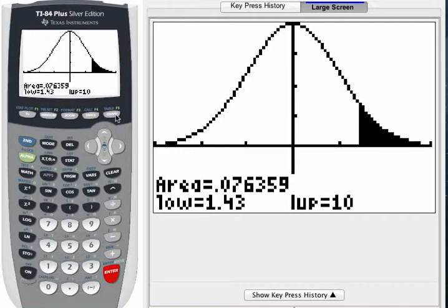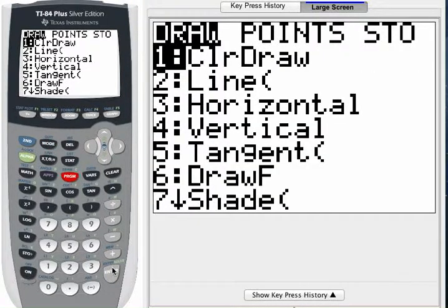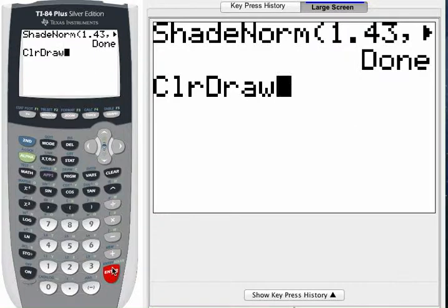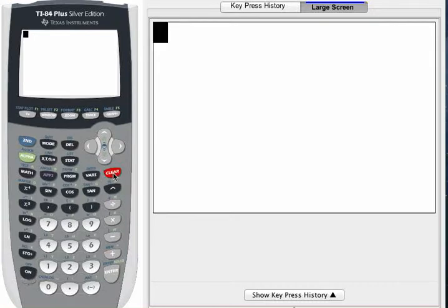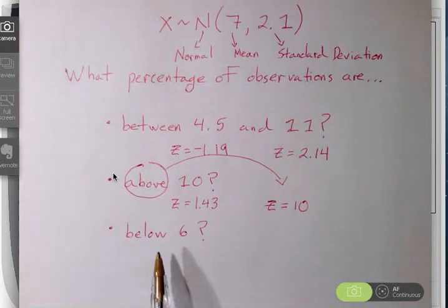So again, let's go back to the home screen. Let's clear the drawing. Second, program button. Press enter to bring it to the home screen. Press enter to execute the command. I'll clear my home screen. And we'll do one more example. The other case that could occur. So what if I'm interested in observations that are below 6?